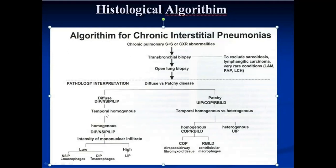Next, we assess homogeneity versus heterogeneity. If the lesion is homogeneous — meaning all areas are at the same stage of development — we examine the intensity of mononuclear infiltrates. High mononuclear infiltrate suggests LIP. Low mononuclear infiltrate prompts us to look for pigmented macrophages: high pigmented macrophages favors DIP, while low pigmented macrophages most likely indicates NSIP. We must then distinguish NSIP from UIP, as they carry different prognoses.